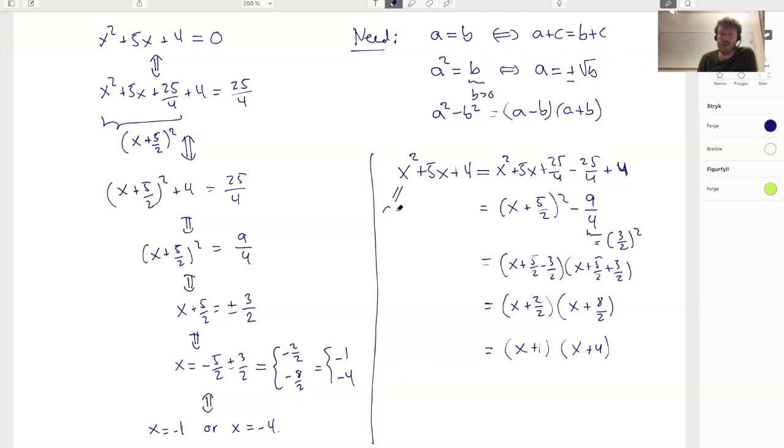And now I can ask, what if I want to solve this thing? Well, this thing is 0 if and only if that thing is 0. But we know that if a product of two factors is 0, this is true if and only if one of the factors is 0, right? Like this.